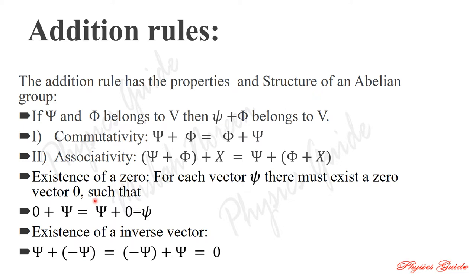The addition rules have the properties and structure of an abelian group. To understand an abelian group, you must first know what a group is. If a group has a commutative property, it is called an abelian group. The second name of an abelian group is the commutative group.